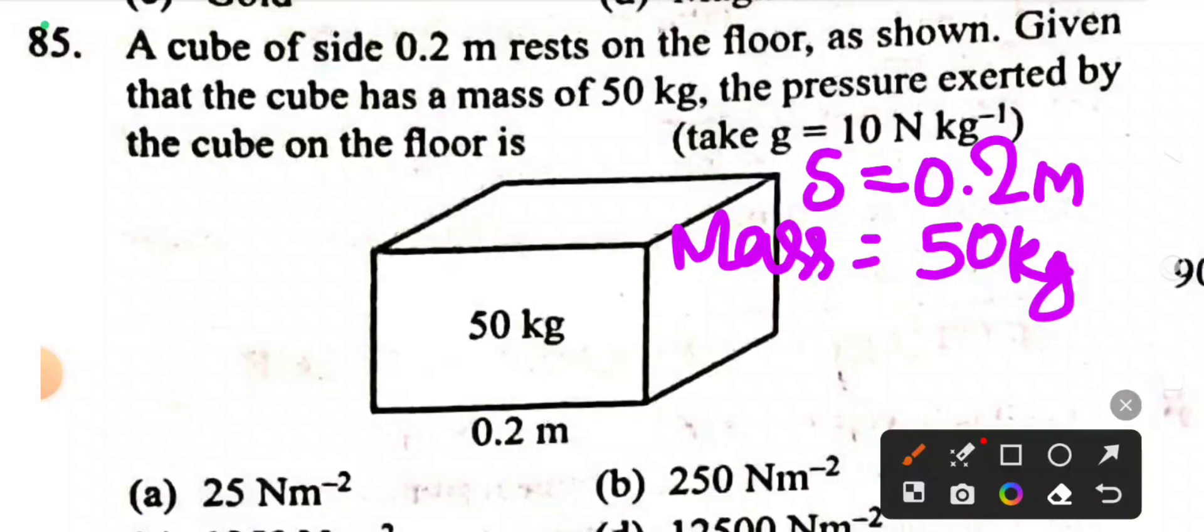Force applied on the floor by the cube: Force equals mass times acceleration. 1 kg equals 10 newton per kilogram, so 50 kg equals 50 into 10, which is 500 newton. The force applied is 500 newton.